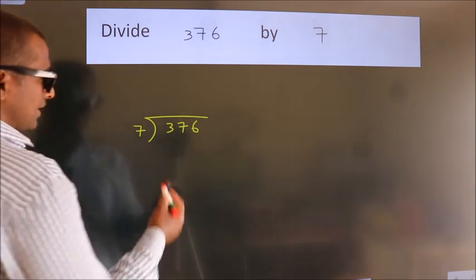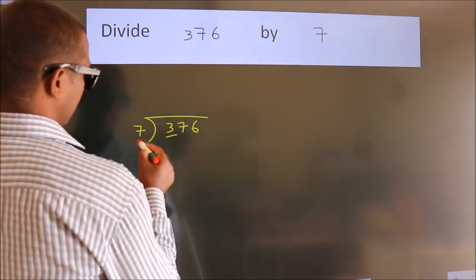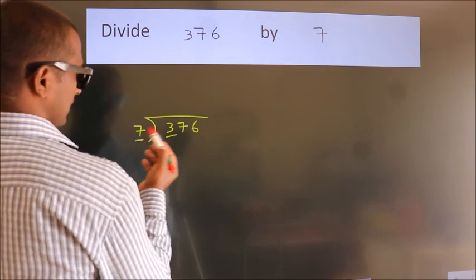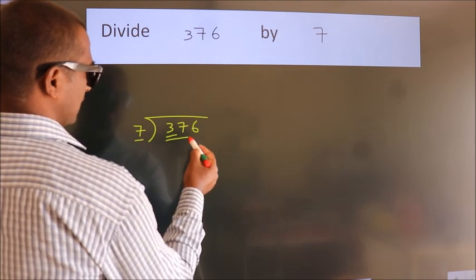Next. Here we have 3. Here 7. 3 is smaller than 7, so we should take two numbers: 37.